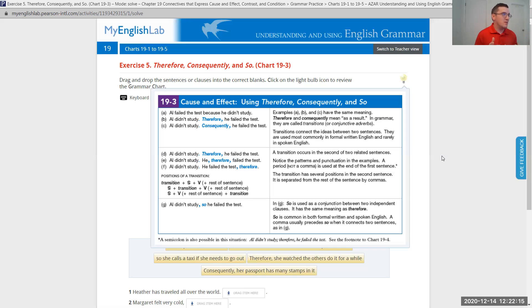A period, not a comma, is used at the end of the first sentence. So we have one complete sentence, Al didn't study, period. The transition has several positions in the second sentence, separated by a comma. D and E are more common. D is probably the most common. We put therefore, comma, at the beginning of the sentence. Sometimes we may use example E, therefore or consequently comes after the subject, separated by commas. Not too often, fairly rarely, will you get example F, where the transition is at the very end of the sentence. That is the least common.